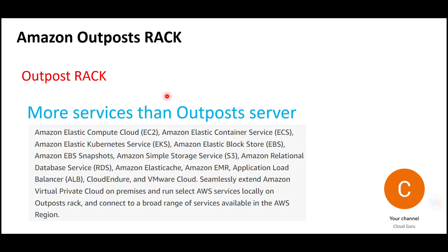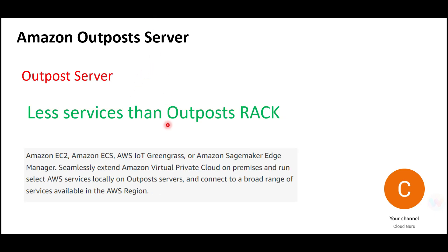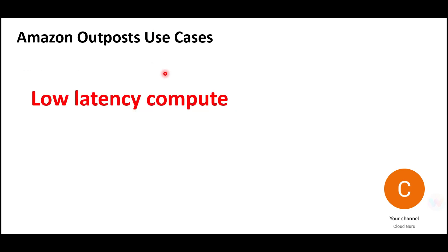What is the difference between Rack and Server? Rack has a lot more services: EC2, ECS, EKS, EBS, S3, EBS snapshots, RDS, ElastiCache — you name it, they have a whole range of services. With Outpost Servers, the number of services is fewer — for example, EC2, ECS, IoT Greengrass, SageMaker, and so on.